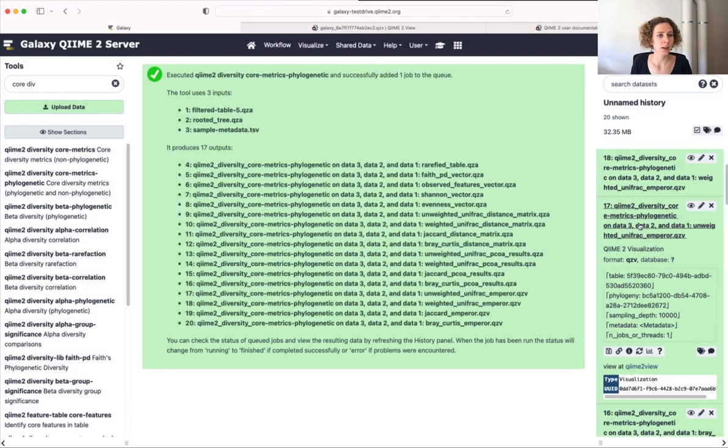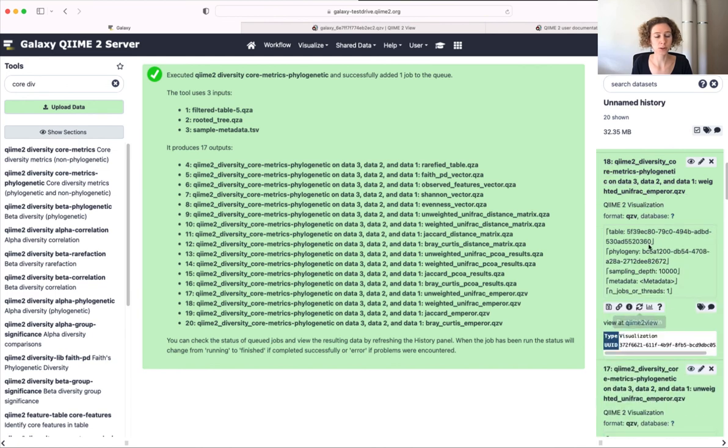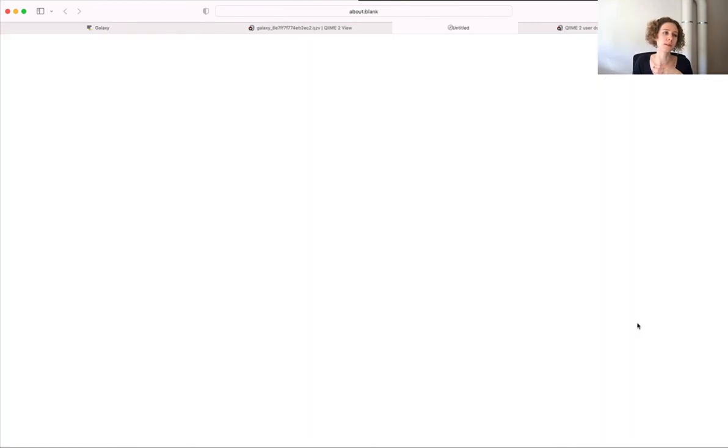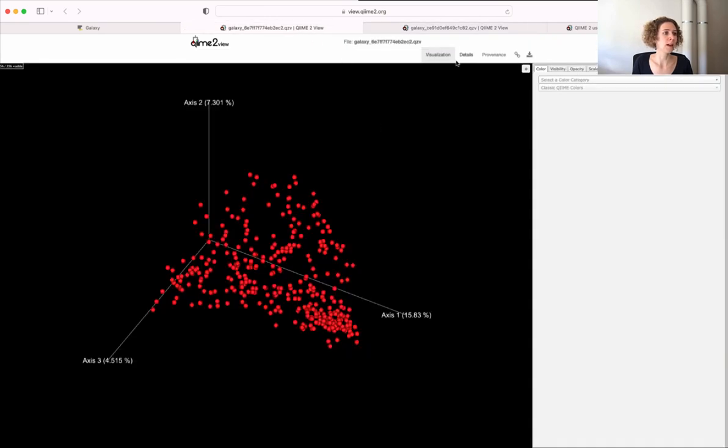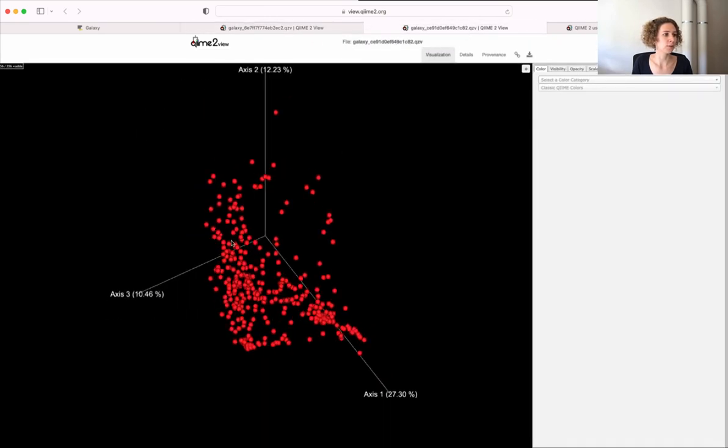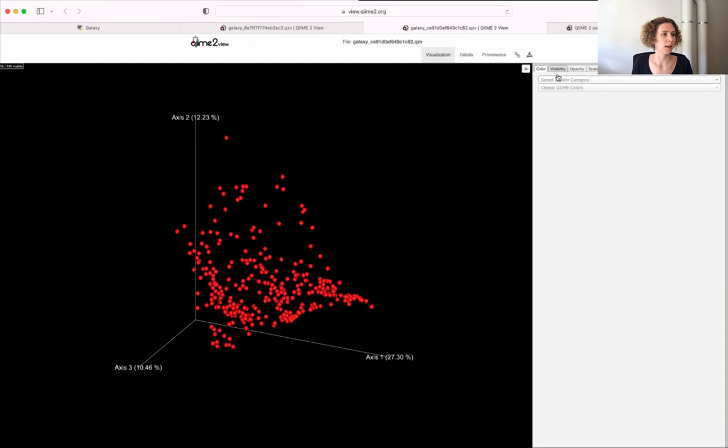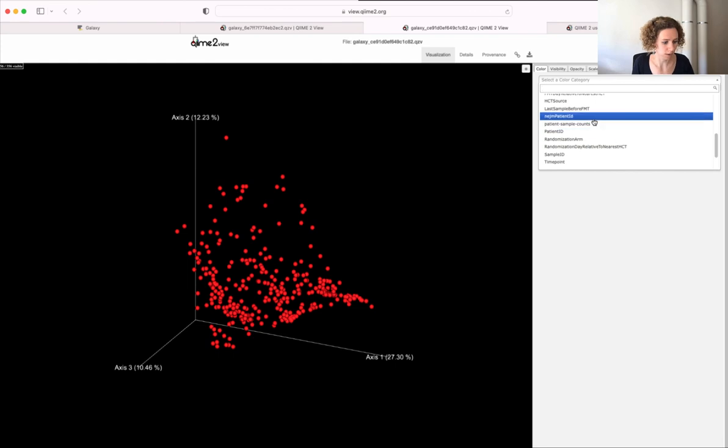So I can even compare different emperor plots that were generated from different diversity matrices. And you will learn about this in the beta diversity tutorial. But just like on the very first glance, you can already see that these look different. And we can gain actually a lot of information from them already.